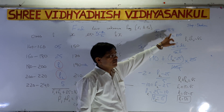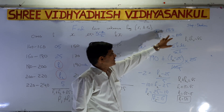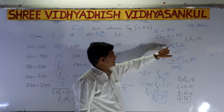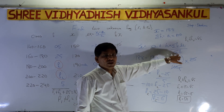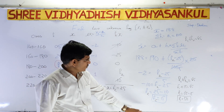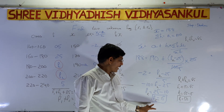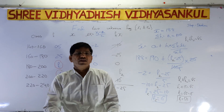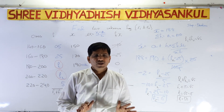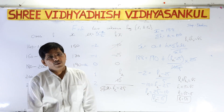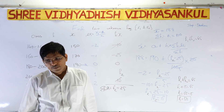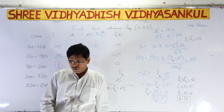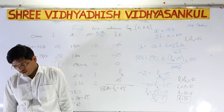If you put all the values — x-bar is given as 188, sigma fi is 100 — using x-bar = A + h × (sigma fi·ui / sigma fi), you can get the value of f2 and then f1. This is the last lecture related to the mean. All types of sums for exercise 14.1 have been discussed. In the next lecture, we move to either median or mode.